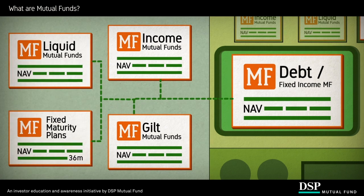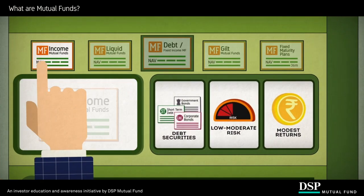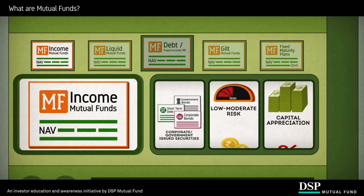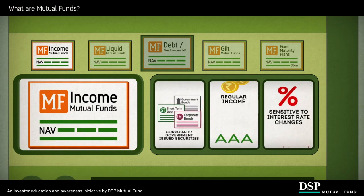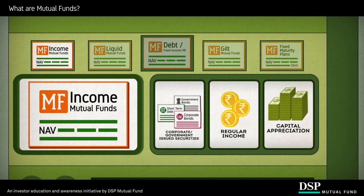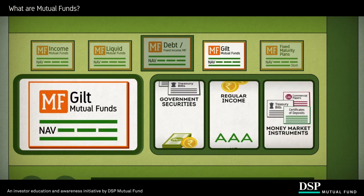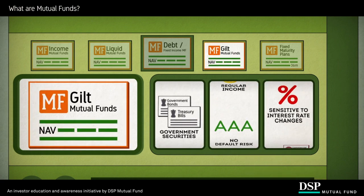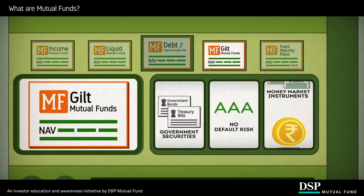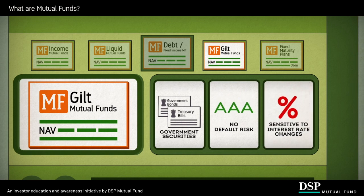The various types of debt funds include income funds, gilt funds, liquid funds, and fixed maturity plans. Income funds primarily invest in a mix of corporate bonds and government-issued securities, seeking to provide returns in the form of income with potential capital appreciation. Gilt funds invest in government securities of medium to long-term maturities and do not carry default risk; however, prices and returns over the short term can be sensitive to changes in interest rates.